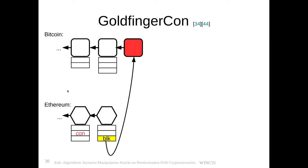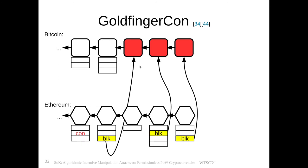If the attack is successful, the value of Bitcoin is diminished because no further transactions can be included in the Bitcoin chain as long as the attack contract on Ethereum is sufficiently funded.